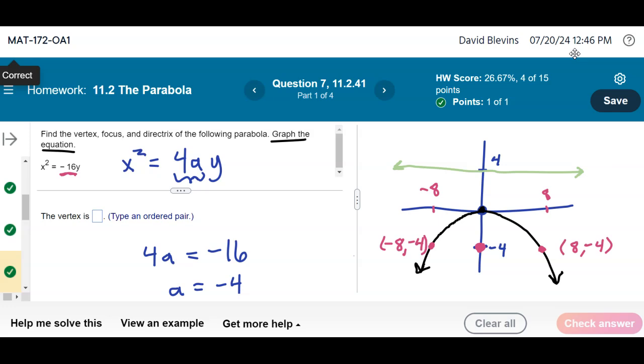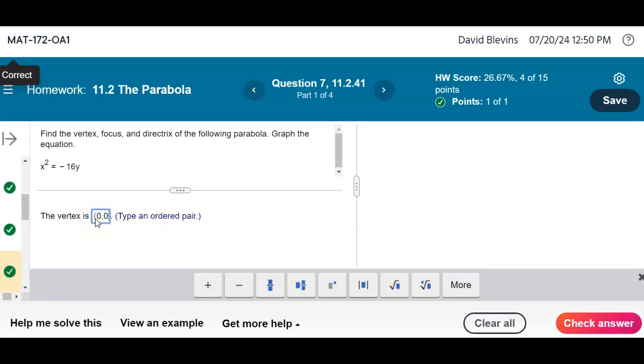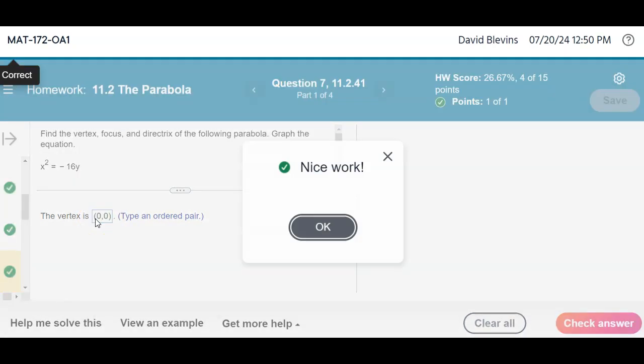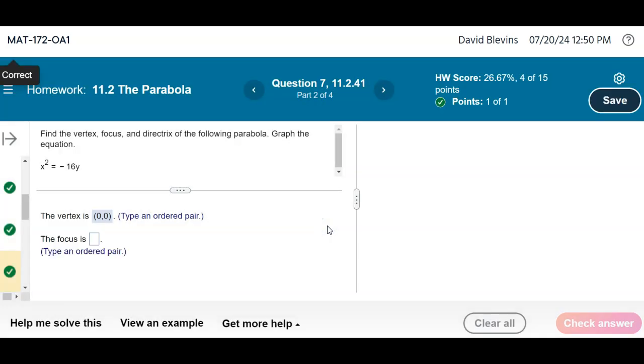Alright, so there's all the different things I need. My focus, 0, negative 4. My directrix, y equals positive 4. My vertex, the origin. And then either of those other two points, which I want to plot at the very end. Alright, vertex is the origin, 0, 0. We're not shifting left or right, so that's always going to be my vertex if it's just x-squared and y to the first.